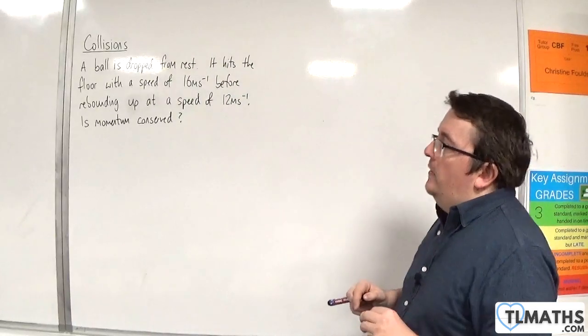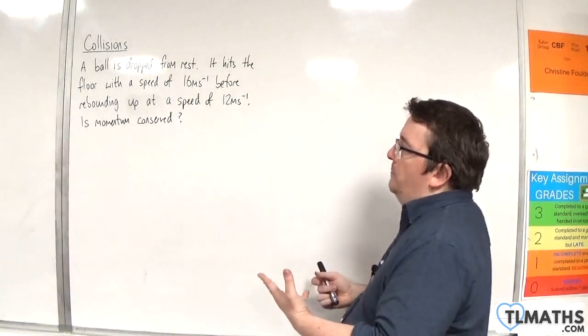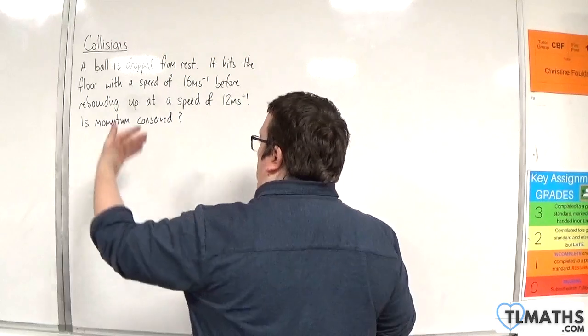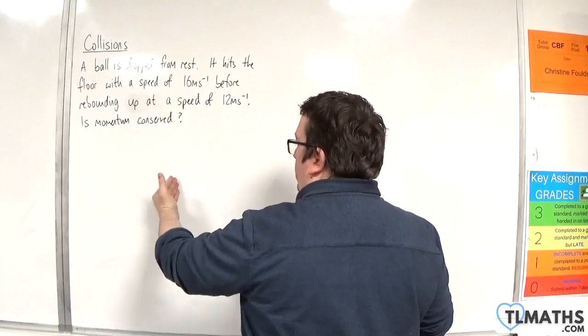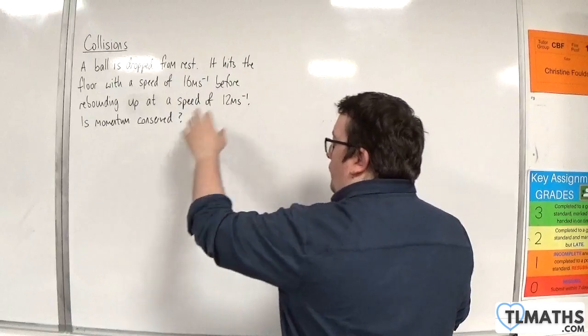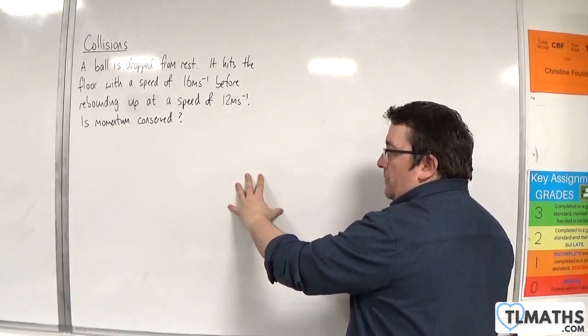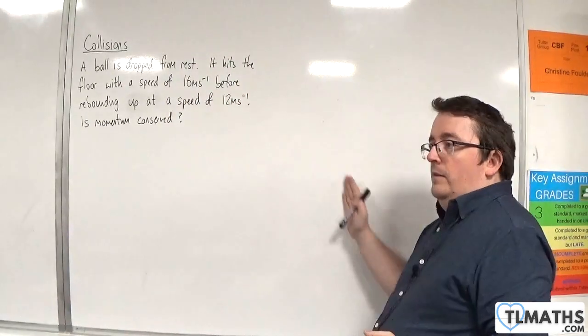Now the thing about this is that in our conservation of momentum formula, where we've got the mass times the velocity of the first particle, plus the mass times the velocity of the second particle, and then that's the before, and then we've got the after part as well.